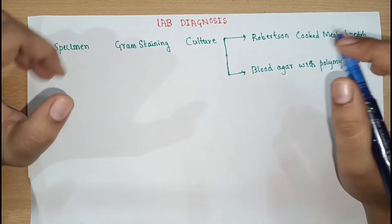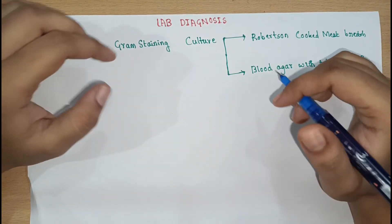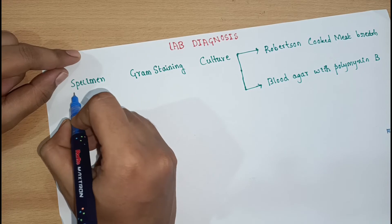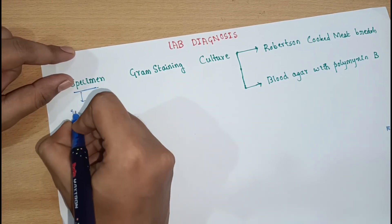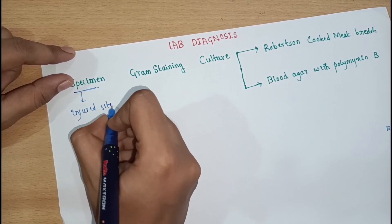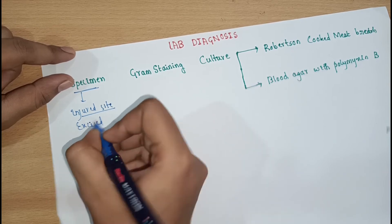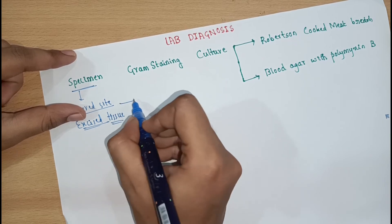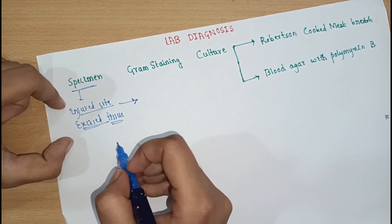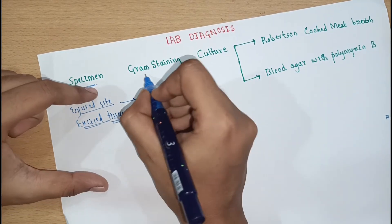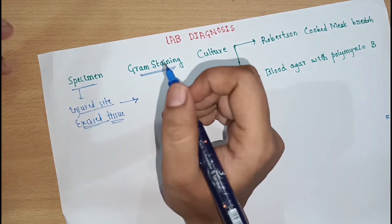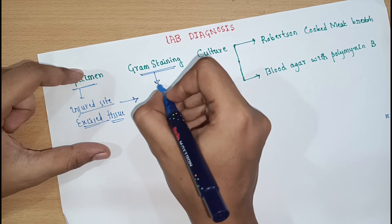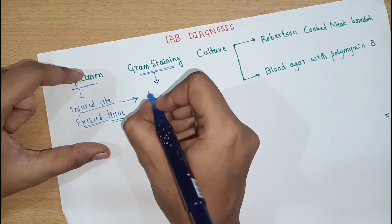Now let us move on to the lab diagnosis — how to identify that an injured person actually has tetanus using microbiological lab diagnosis. First, we collect the specimen from the injured site itself. We excise a small tissue sample from deep within the wound and send it for further investigations. The specimen is then sent for staining. For Clostridium tetani, gram staining is used, which produces a characteristic drumstick appearance.